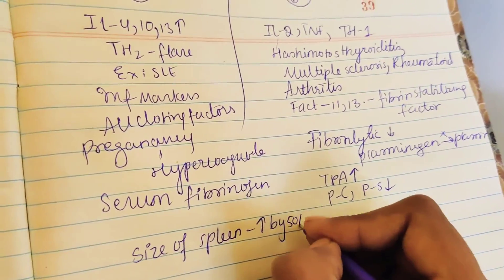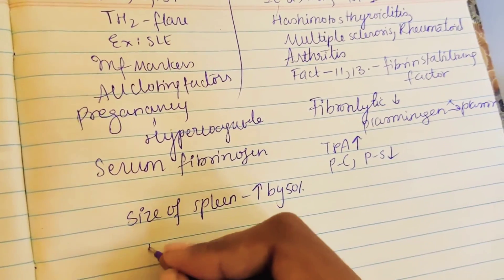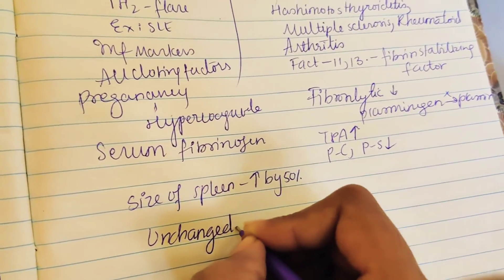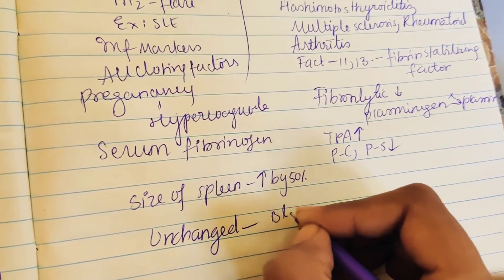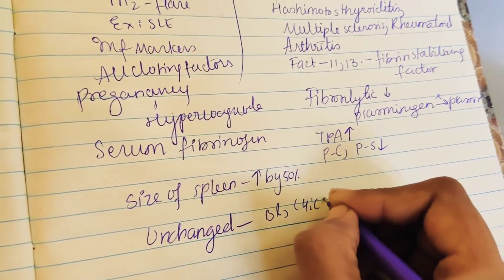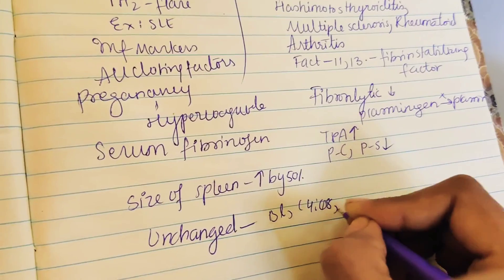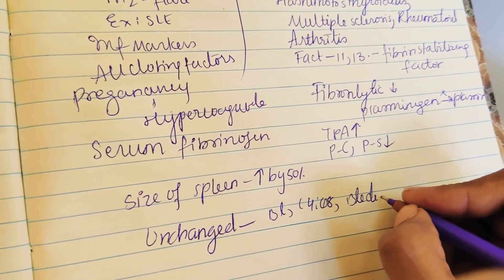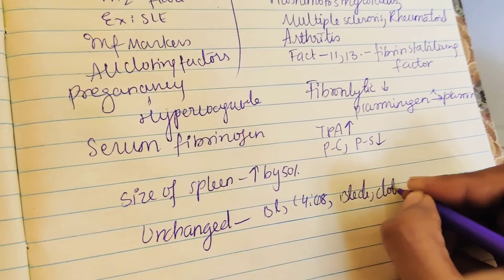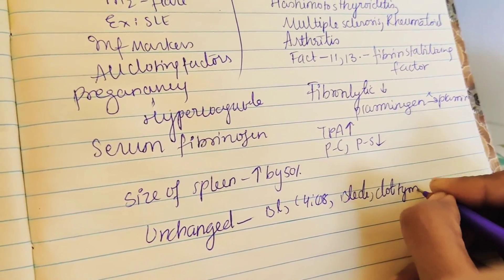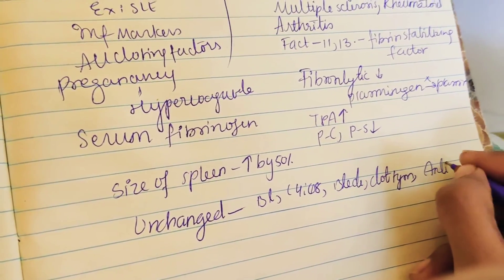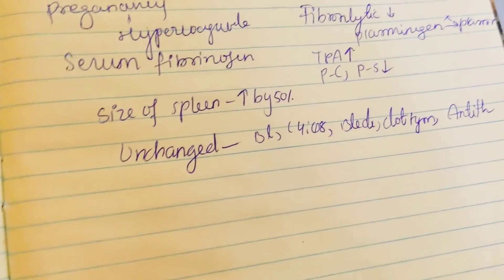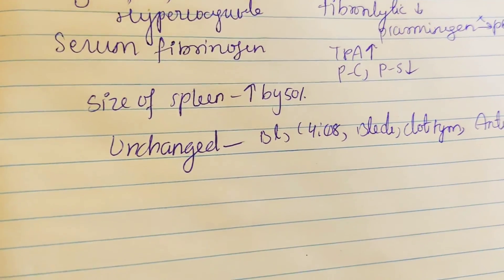Blood parameters that are unchanged in pregnancy are: B lymphocytes, CD4 to CD8 ratio, bleeding time, clotting time, and antithrombin time. With this we complete today's discussion, and next we will start with changes in the respiratory system.